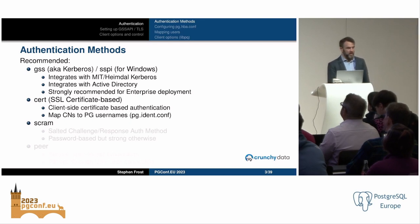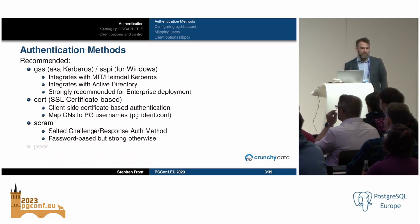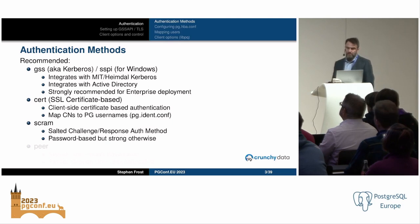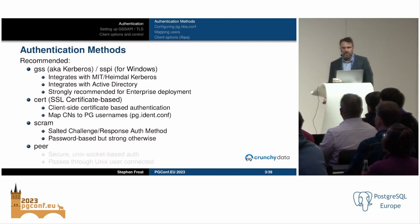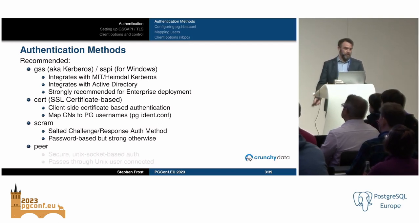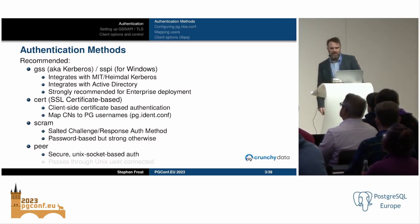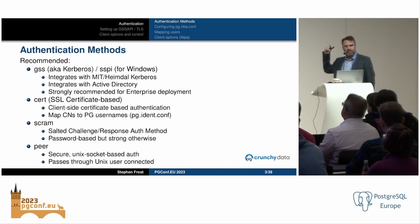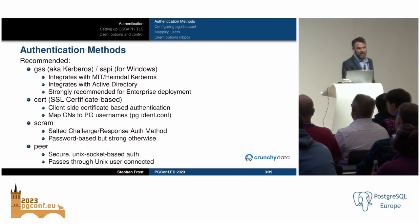Last but not least is SCRAM — the Salted Challenge Response Authentication Method. This is the password-based method you should be using these days. If you're using any other password-based method, you really need to move off of it. And finally, peer authentication, which is only over local Unix sockets — it basically passes through what Unix user connected.